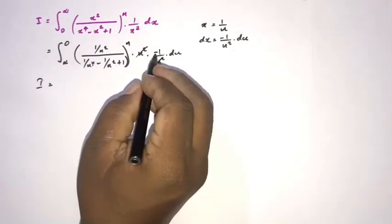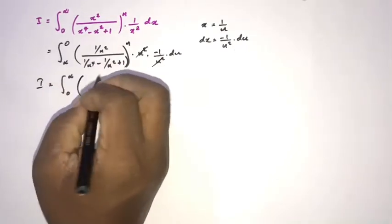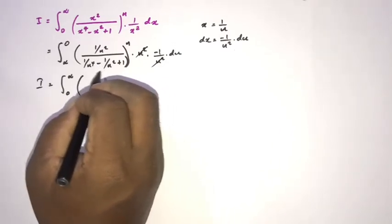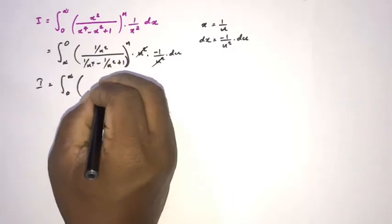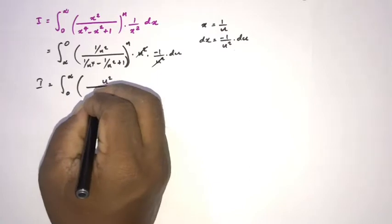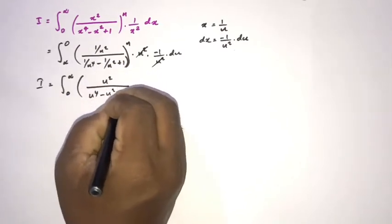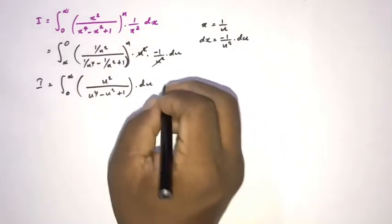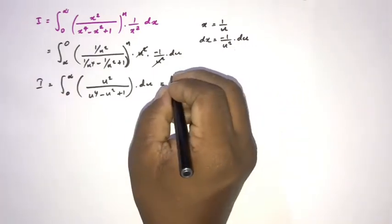Changing the boundaries, the minus sign is cancelled by swapping limits, giving 0 to infinity. Taking the common denominator u to the fourth power, we simplify to get: u squared over u to the fourth power minus u squared plus 1, raised to the n-th power, times du.